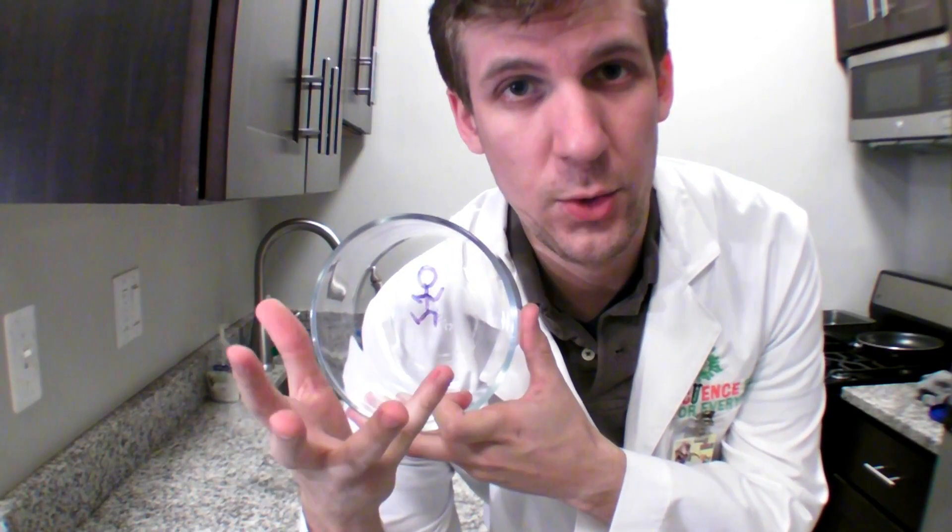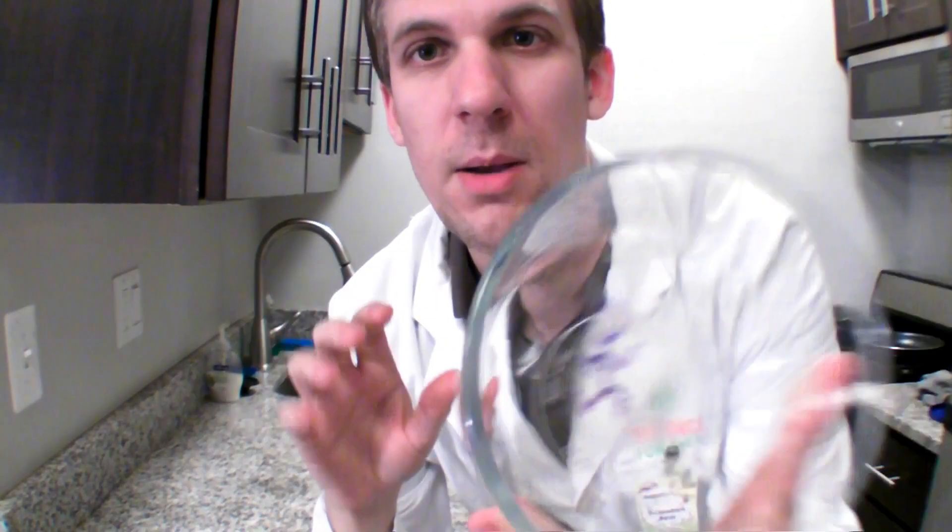When you draw with a dry erase marker, what actually comes out of the marker is a liquid. There's little bits of pigment, and they're dissolved into a liquid that actually evaporates really quickly. So this was a liquid when I drew my little man on there, but it turned into a solid pretty quickly.